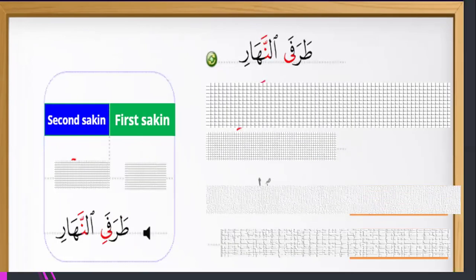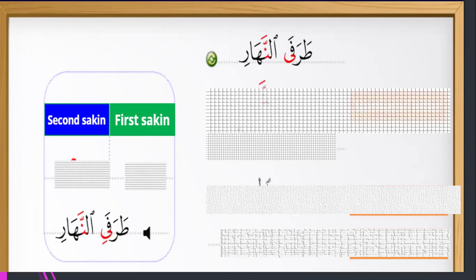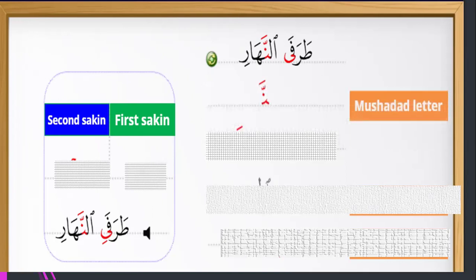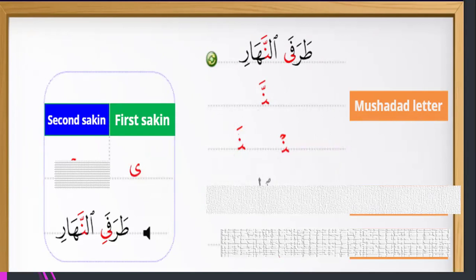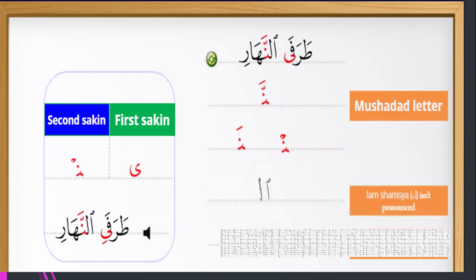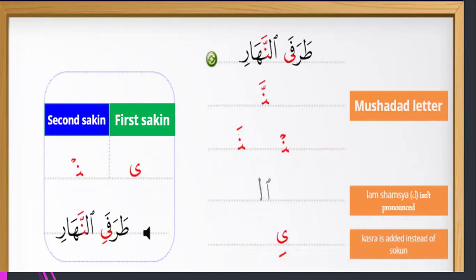Example: 'tarafayin mena haa.' Noon mushaddad — first noon has sukun, second noon has fatha. 'Tarafayin' — first sukun letter is little ya, second sukun letter is little meem. Lam shamsiya is in the 'al-fay.' Kasra is added instead of sukun: it is 'tarafayin mena haa.'